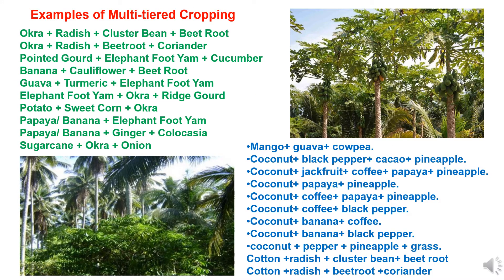Here we have shown examples of multi-tiered cropping. There are various combinations of crops which are generally preferred and best suited. Like okra plus radish plus cluster bean and beetroot is one combination. Okra plus radish plus beetroot with coriander; pointed gourd plus elephant foot yam plus cucumber; banana with cauliflower and beetroot; guava plus turmeric plus elephant foot yam; elephant foot yam plus okra with ridge gourd; potato, sweet corn and okra; and papaya-banana cultivation with elephant foot yam, ginger, colocasia; and sugarcane grown along with okra and onion.